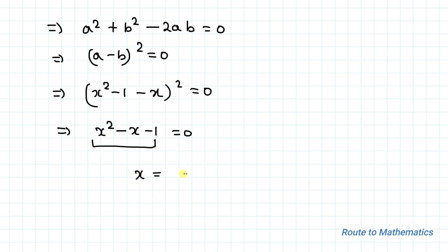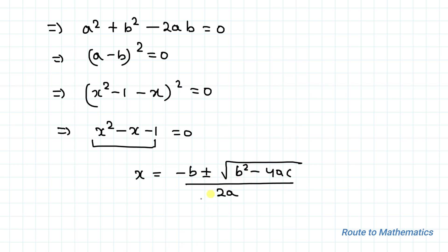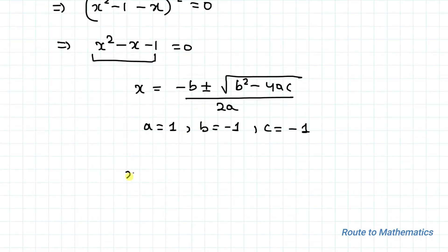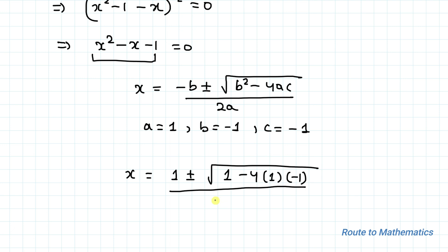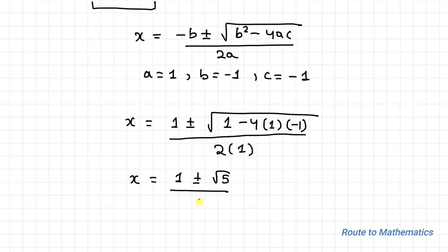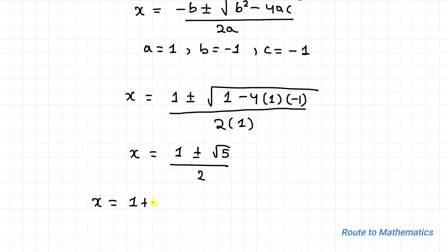In order to find the value of x, we apply the quadratic formula: x = [−b ± root under (b²−4ac)] / 2a. Here a=1, b=−1, and c=−1. Substituting, we get x = [1 ± root under (1+4)] / 2, which gives x = (1 ± √5) / 2. So the two values are x = (1+√5)/2 or x = (1−√5)/2.